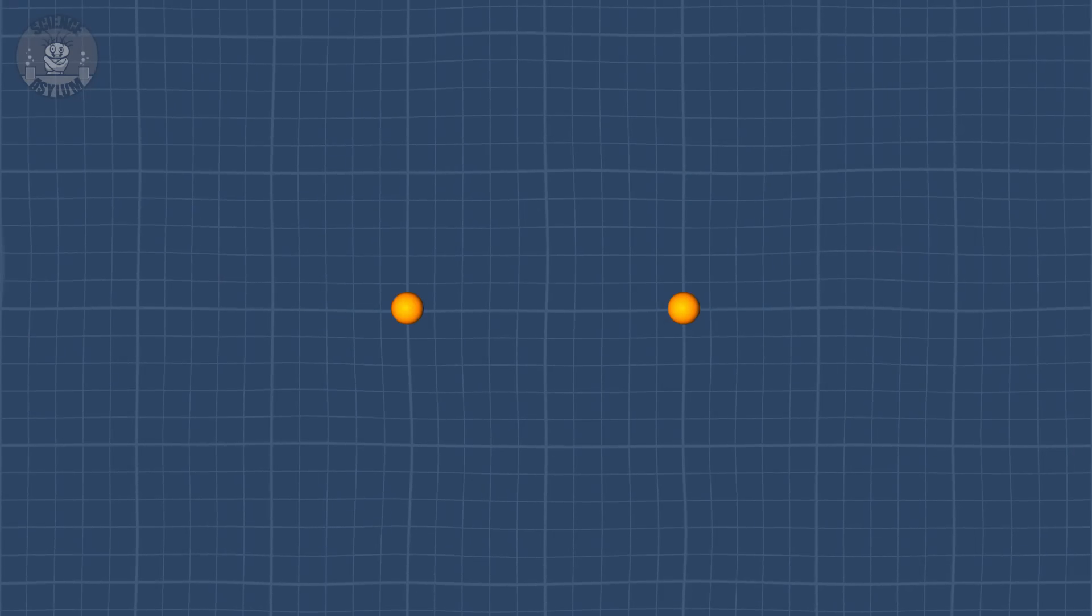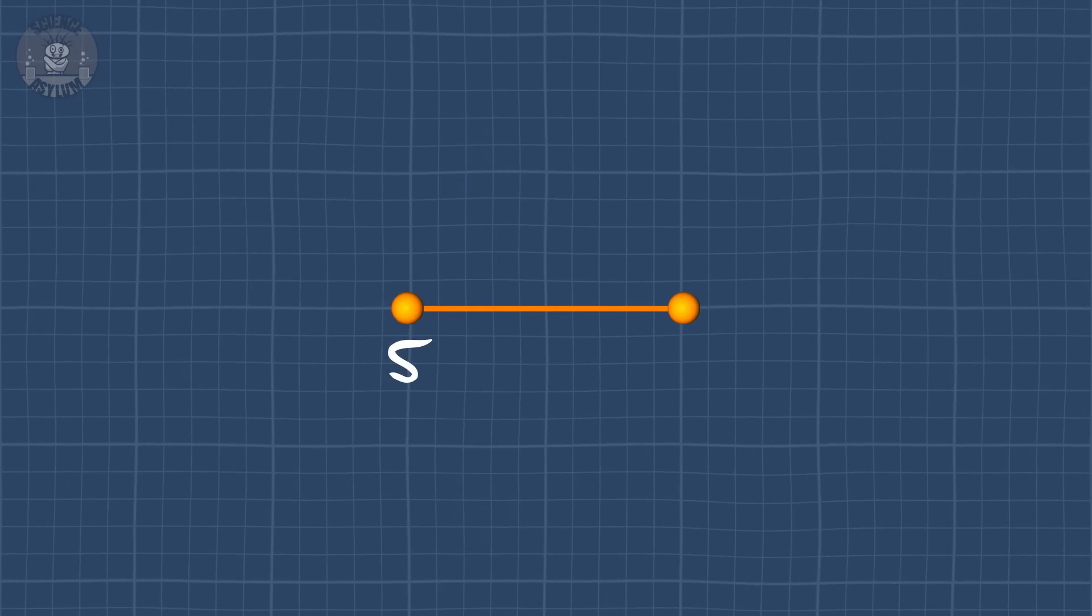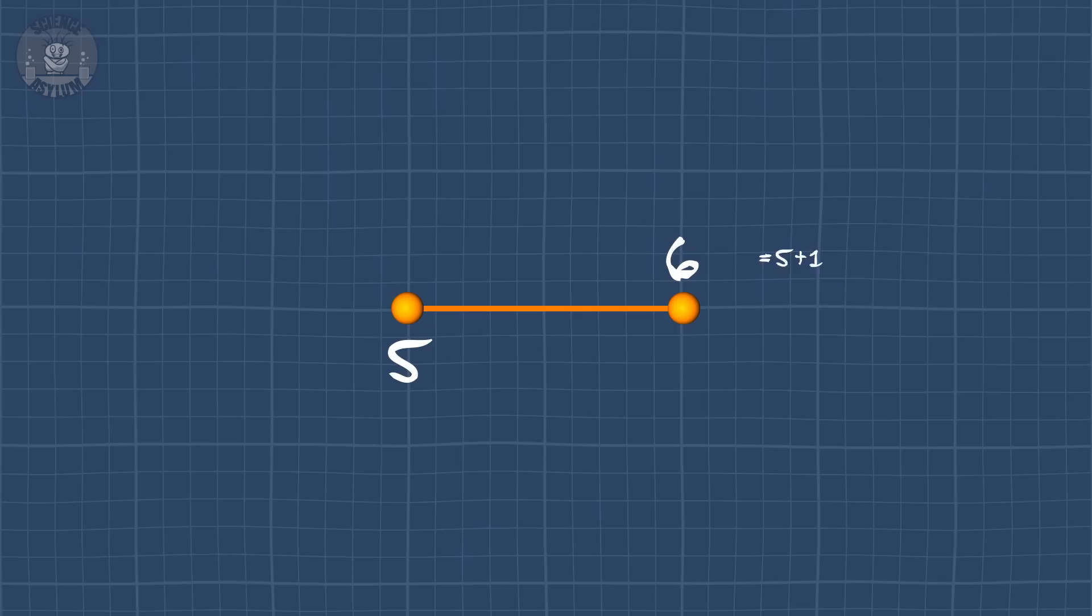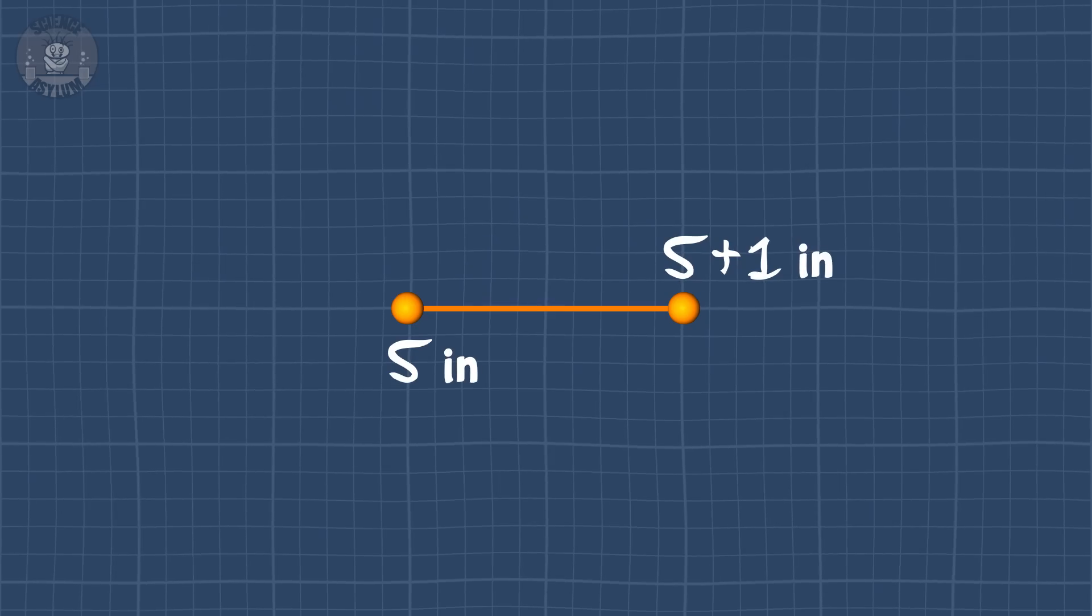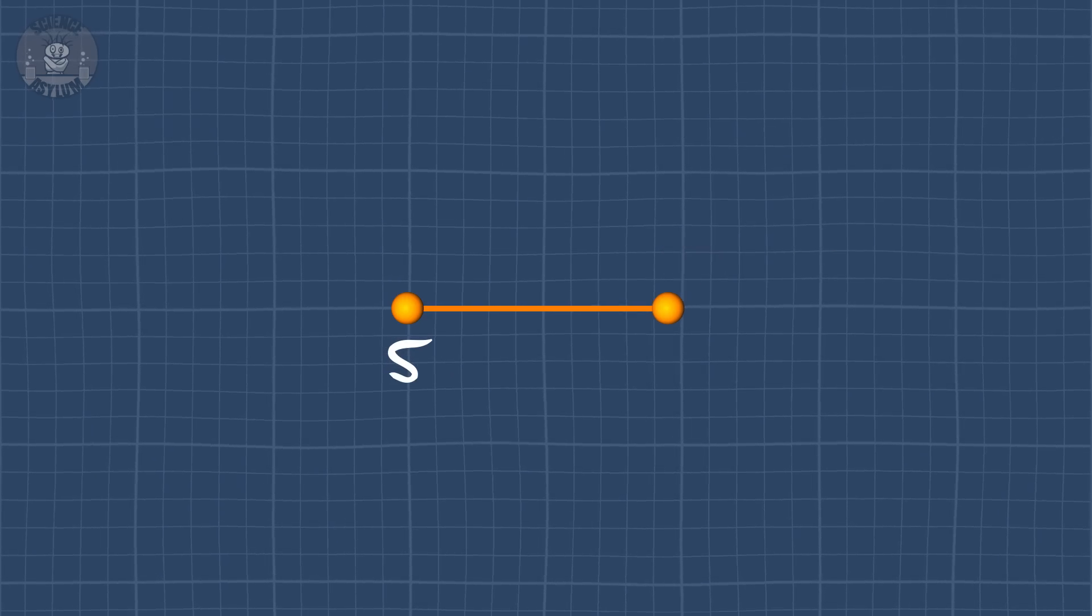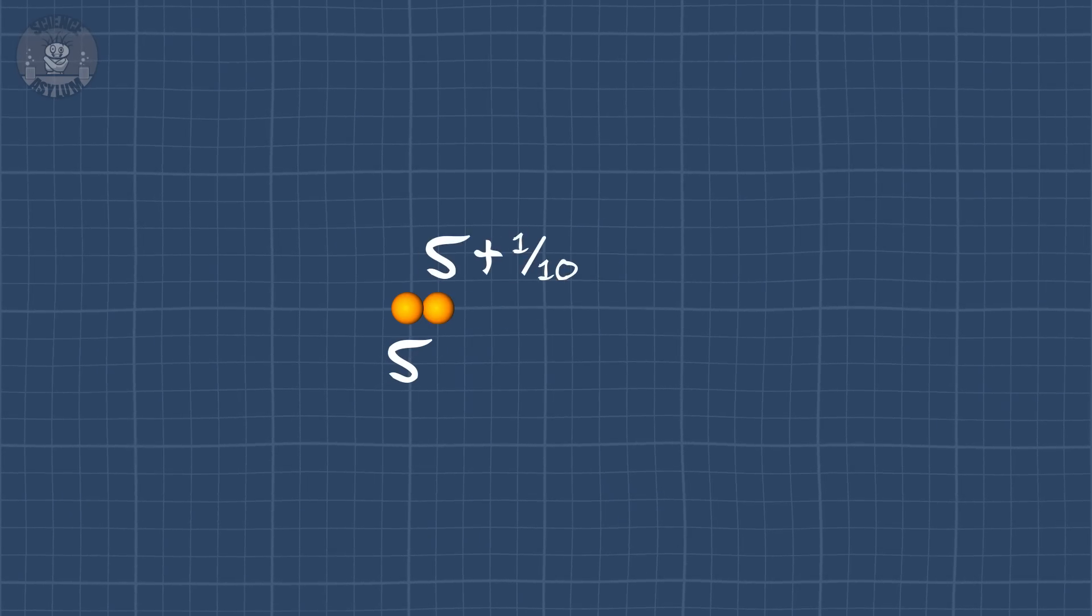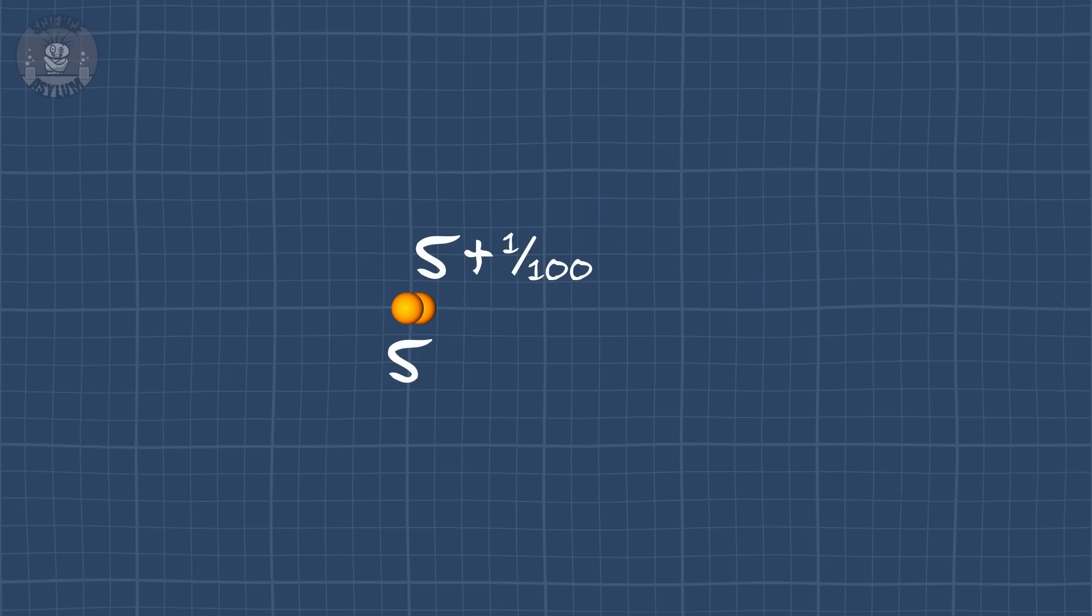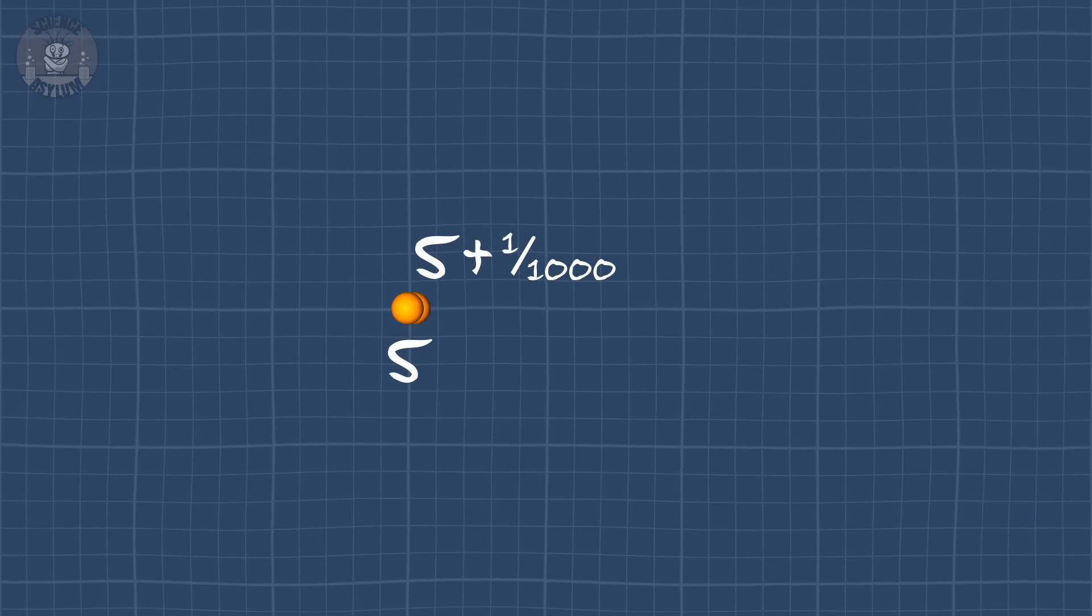Let's start with two points separated by this much space. Say this point is at 5 and this point is at 6, or 5 plus 1, because they're separated by one unit. Maybe it's inches, maybe it's centimeters, whatever. It doesn't matter. If we make the space a little smaller, the second point might be at 5 plus a half, or 5 plus a tenth, or 5 plus a hundredth, or 5 plus a thousandth. The points keep getting closer together. They're almost the same point, but not quite.